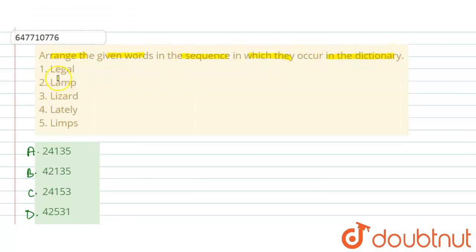First one is legal, second lamb, third one is lizard, fourth one is lately and fifth one is lamps. Okay.